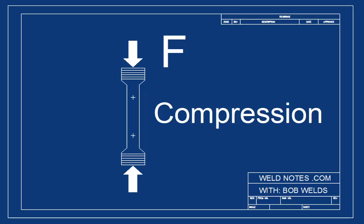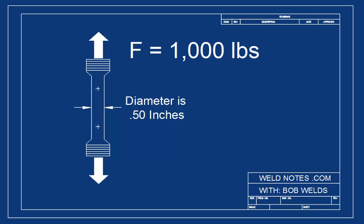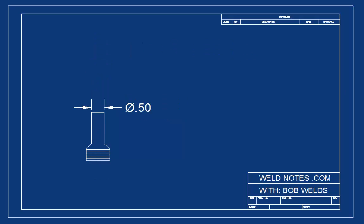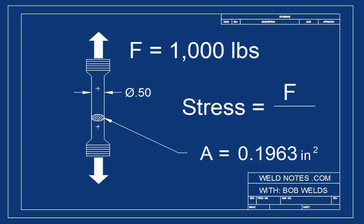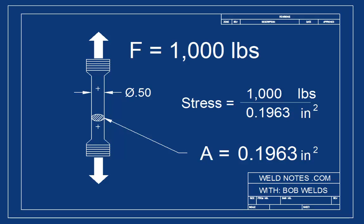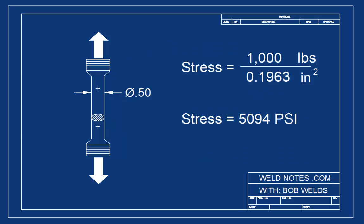Now in the last video we used pounds as the units of force and we measured the diameter of the rod in inches. When we calculated the area the result was in square inches. To find the stress we took the pounds of force and divided by the square inches of the cross-sectional area. The result was a stress in the units of psi or pounds per square inch. Keep in mind that per means divided by so psi means pounds divided by square inches.